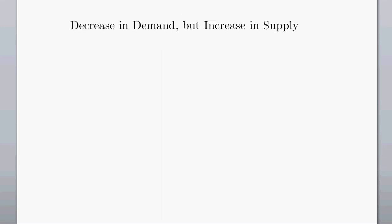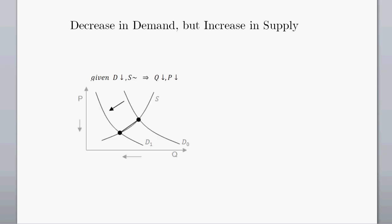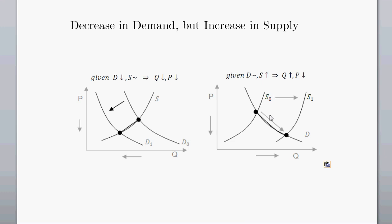What about a decrease in demand but an increase in supply? Starting with a decrease in demand — going from D sub nought to D sub 1 — a decrease in demand is going to decrease the equilibrium price and drive quantity down as well, so both price and quantity are decreasing. Then an increase in supply — going from S sub nought to S sub 1 — is going to drive down the price and also increase the quantity.